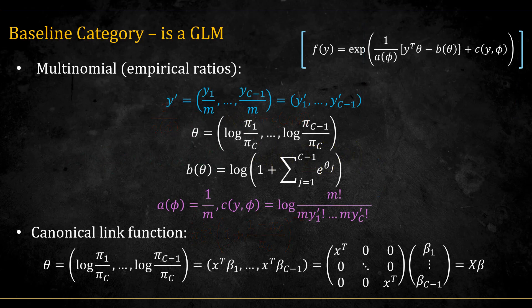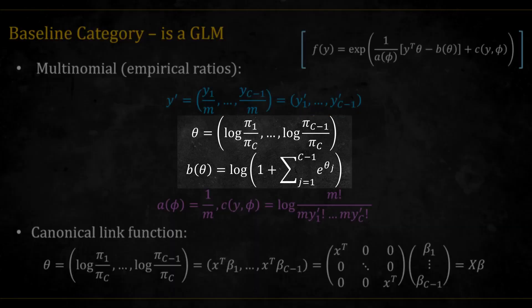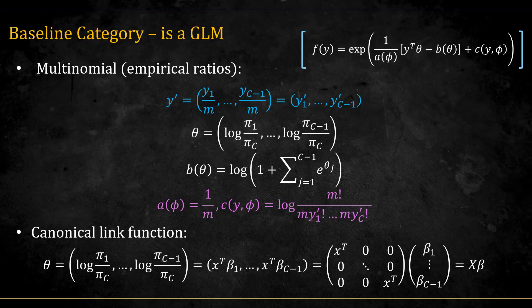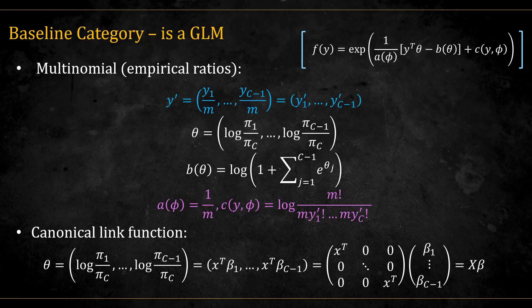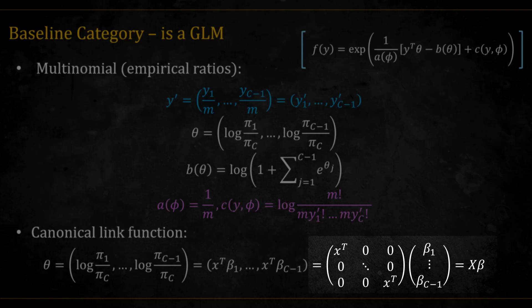For the multinomial, we use the same trick as in the binomial case: we divide by m to move to empirical ratios. We define y-dash, and that y-dash can be modeled by a multivariate GLM. The theta and b(theta) stay the same. We alter a(phi) to be 1/m and c(y, phi) to be the corresponding function. If we use the canonical link function, we relate the thetas directly to the linear predictors. We can also write this in matrix form, where each beta is a vector of size p. We can also incorporate different sizes m into this model by using weights instead of a(phi).